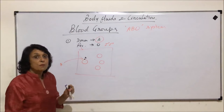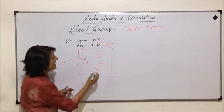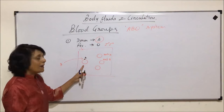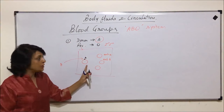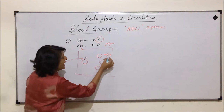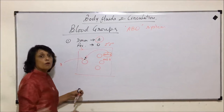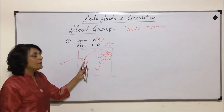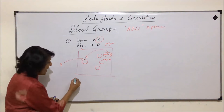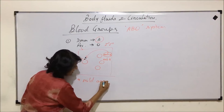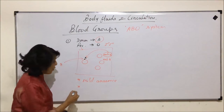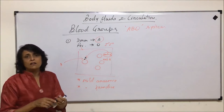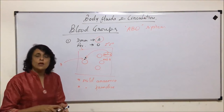The recipient's blood group O means no antigen is produced, but the plasma has anti-A and anti-B antibodies. When the donor's RBCs carrying antigen A enter the recipient's body, antibody A reacts with antigen A. This antigen-antibody reaction causes the RBCs to rupture, resulting in mild anemia or mild jaundice. Sometimes these reactions may become more severe and need to be dealt with differently.